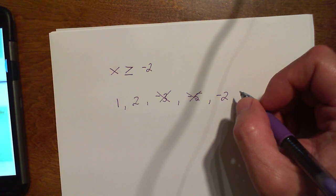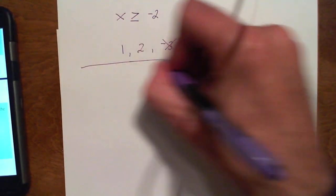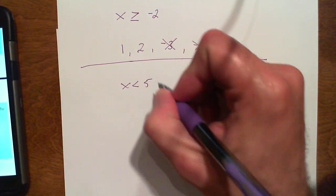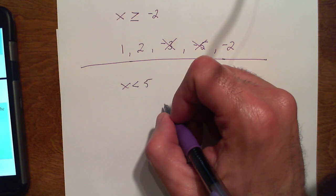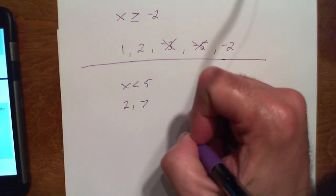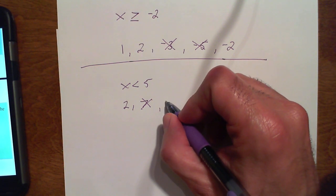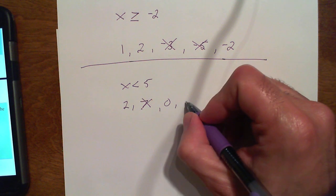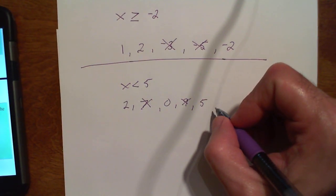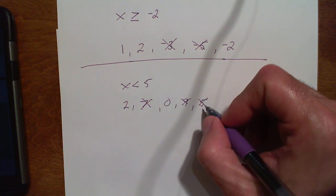Let's do another one. Is x less than 5? Anything less than 5 is what x will be. Can x be 2? Yes. Can x be 7? No, x cannot be 7. Can x be 0? Yes. Can x be 9? No, 9 is bigger than 5. Can x be 5? No — 5 is not less than 5, so it cannot be 5. It needs the equal sign. So it's anything less than 5.